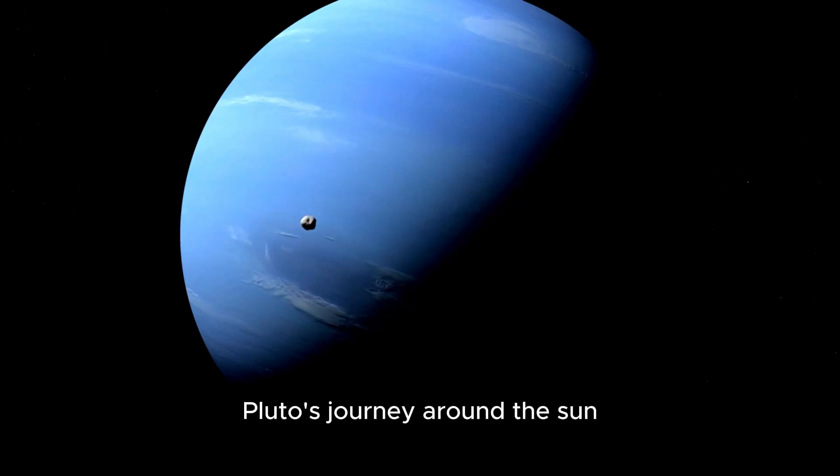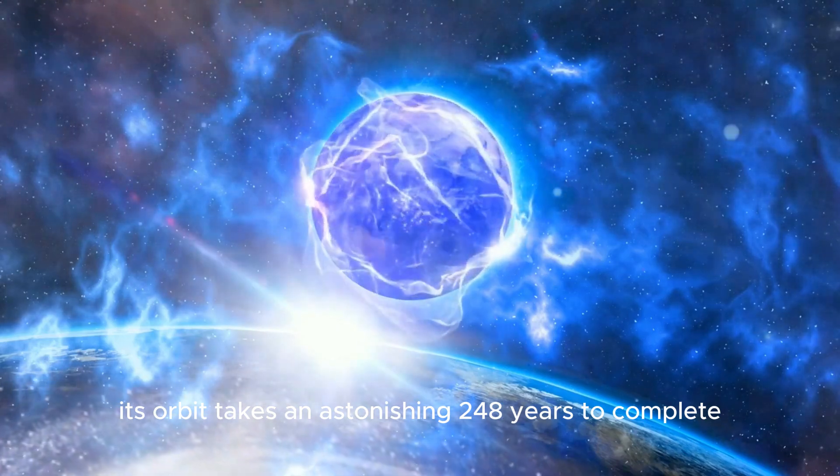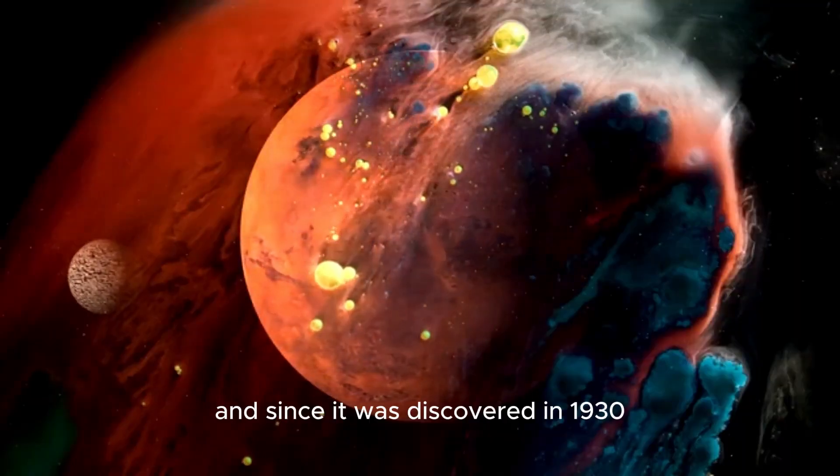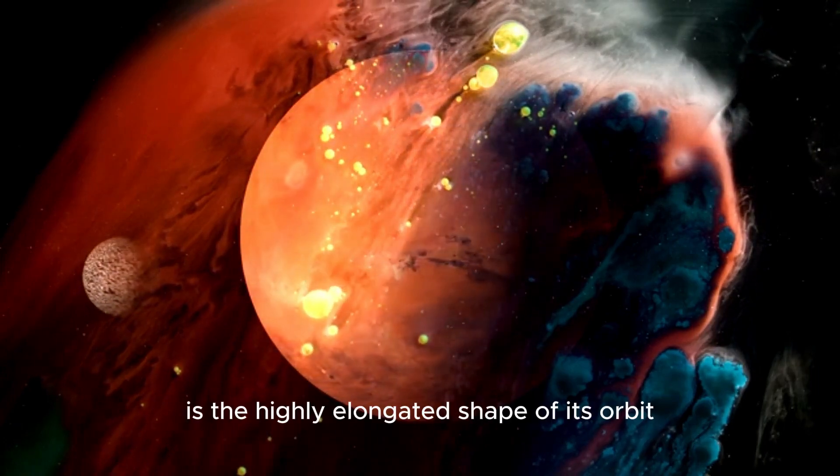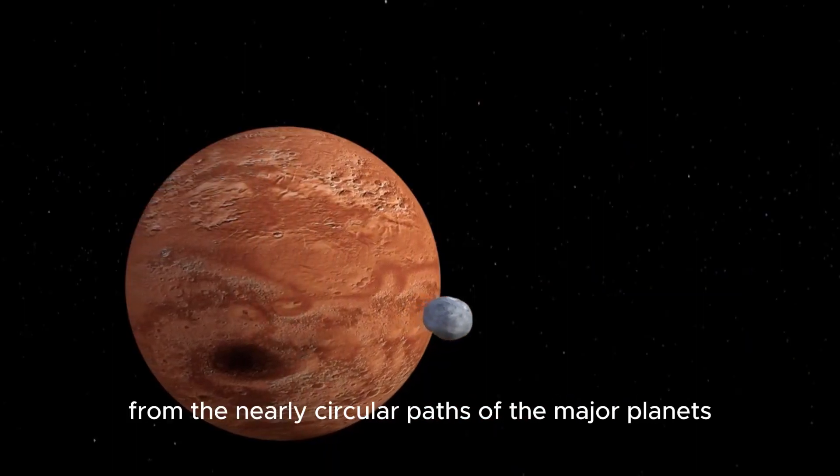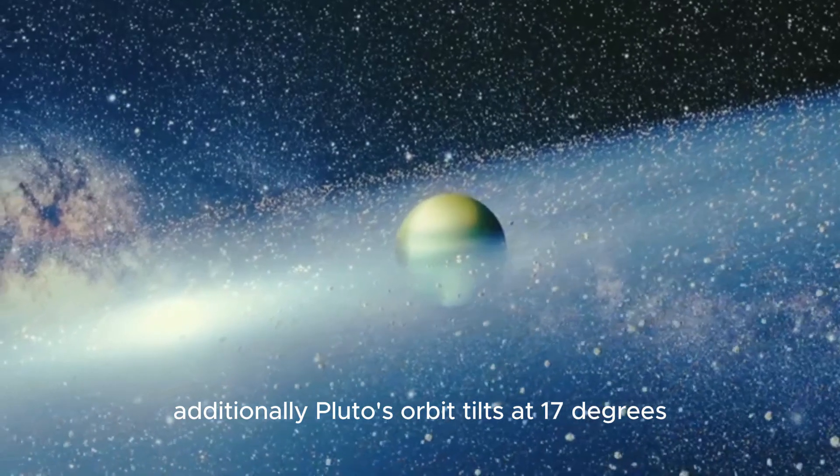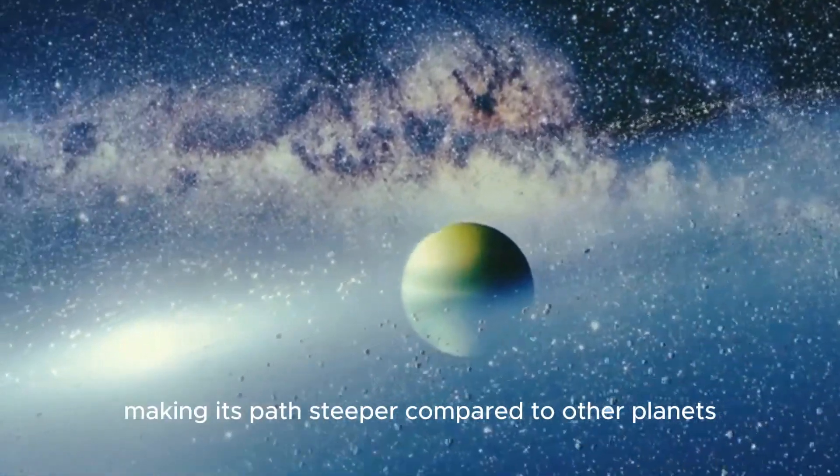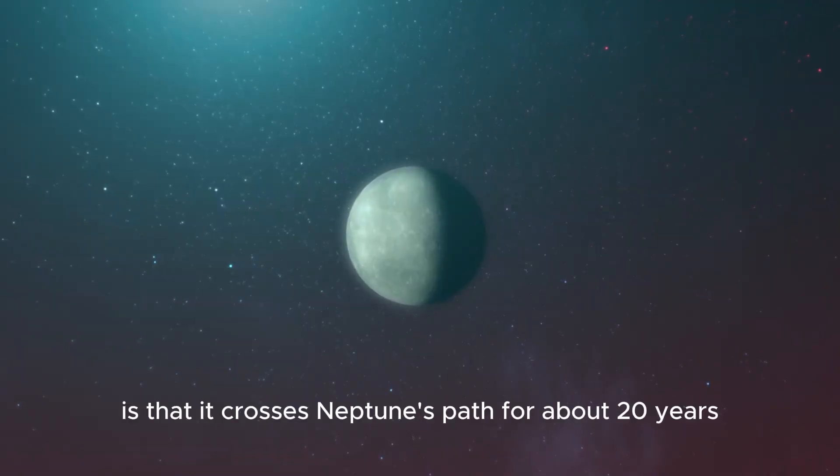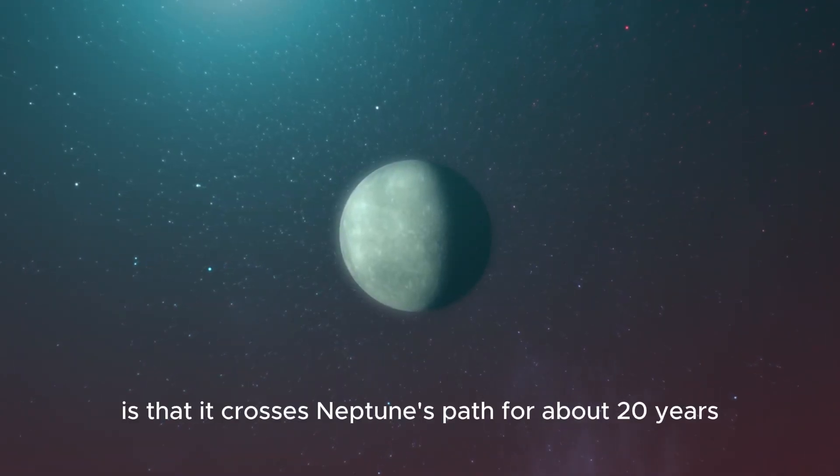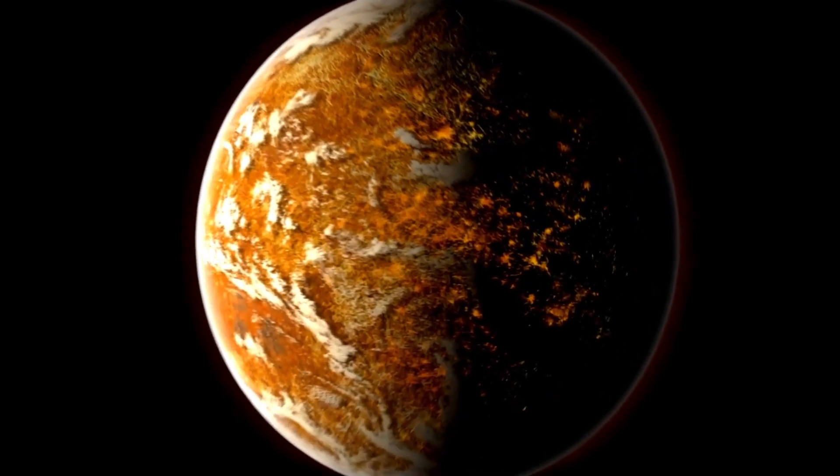Pluto's journey around the Sun is defined by its unique features. Its orbit takes an astonishing 248 years to complete, and since its discovery in 1930, Pluto has not yet finished a full revolution. Adding to its allure is the highly elongated shape of its orbit, which differs from the nearly circular paths of the major planets. Additionally, Pluto's orbit tilts at 17 degrees to the plane of the solar system. For about 20 years during each orbit, Pluto gets closer to the Sun and Neptune.